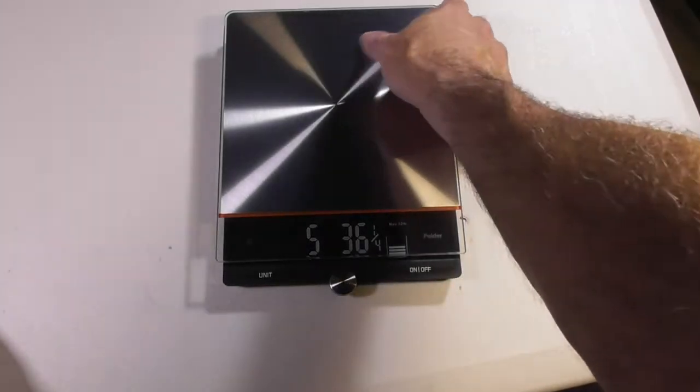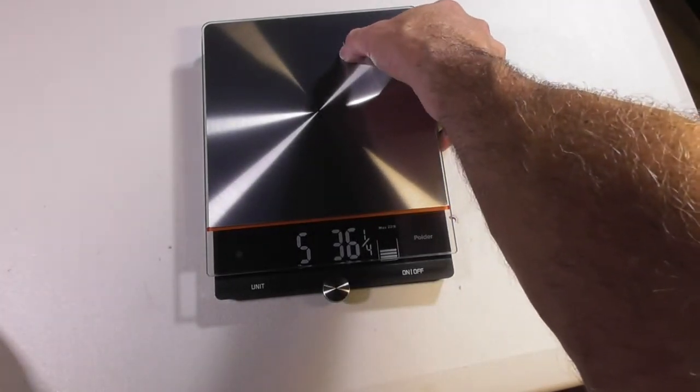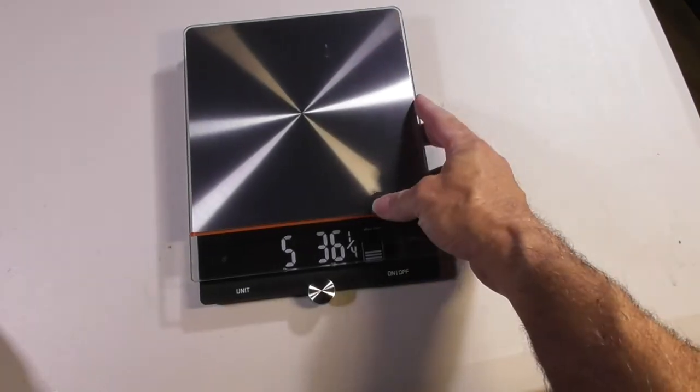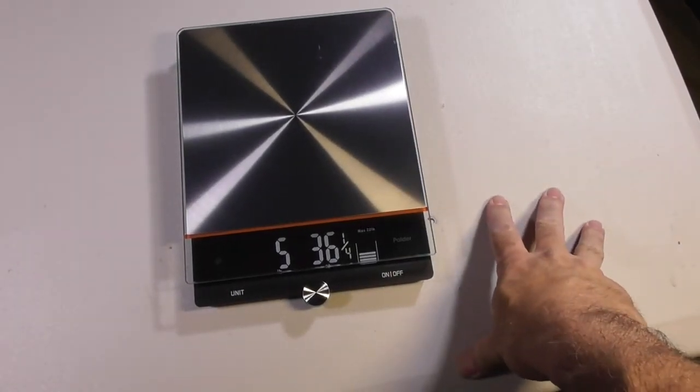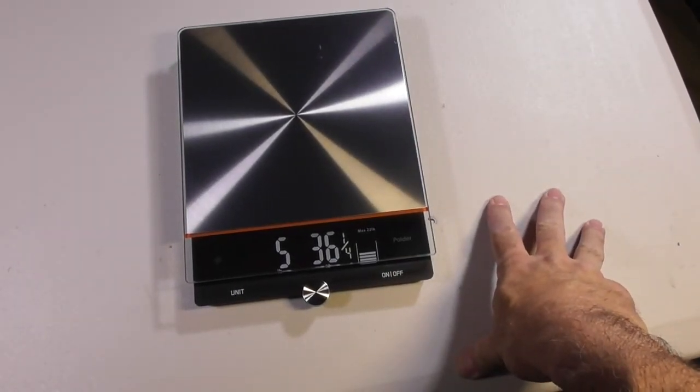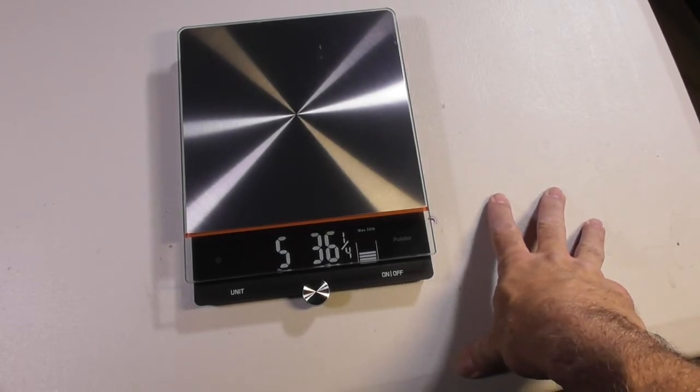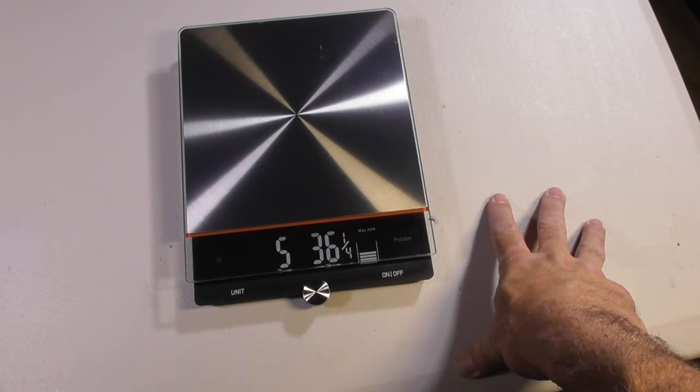Alright, it's out of the package. Nice plastic table over here. Why did I get this thing? Do I really need something like this? I don't really cook. So if you're a baker you might be able to use this for measuring your ingredients instead of using measuring cups.